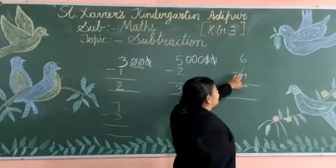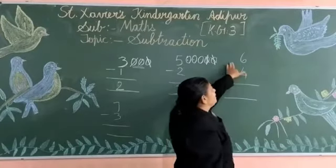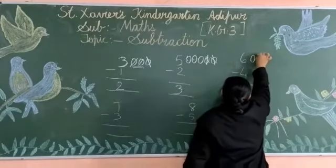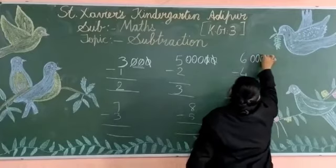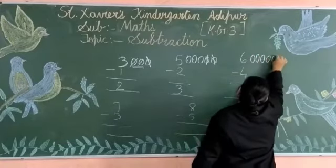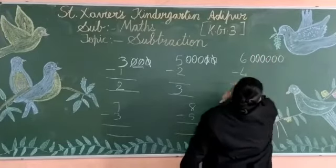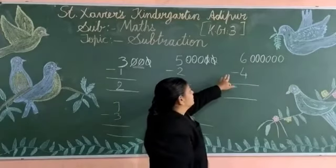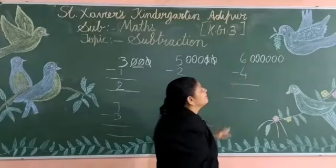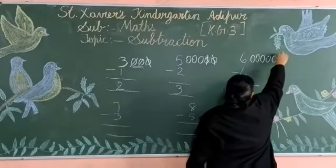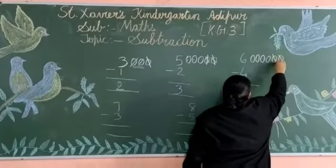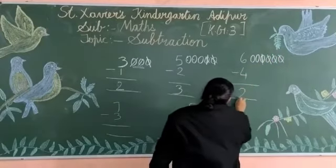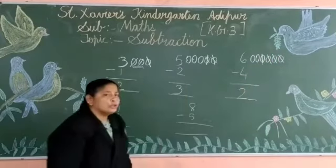Now: 6 minus 4. Upar kaun si number hai? 6. That many circles you have to draw. 1, 2, 3, 4, 5, 6. Now 4 circles you have to remove — cut karo. 1, 2, 3, 4. Bacha ka kitna? Yes, your answer? 2.